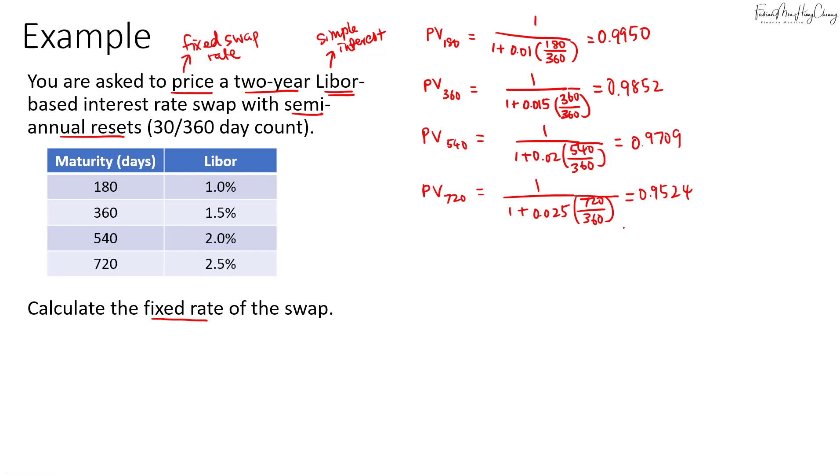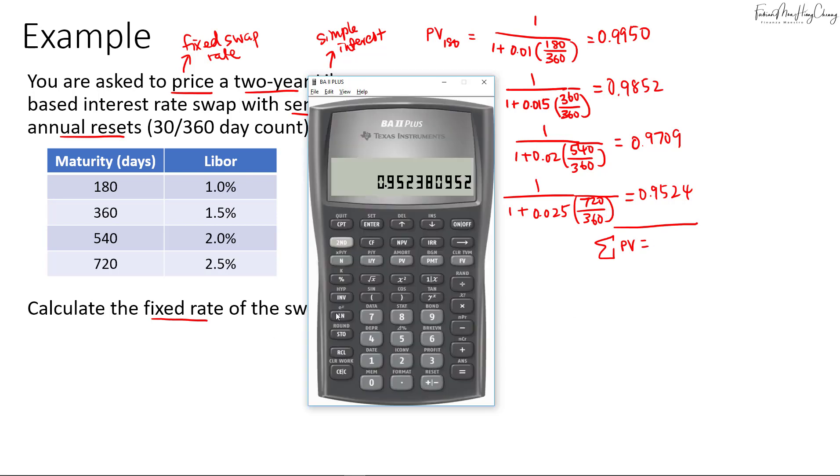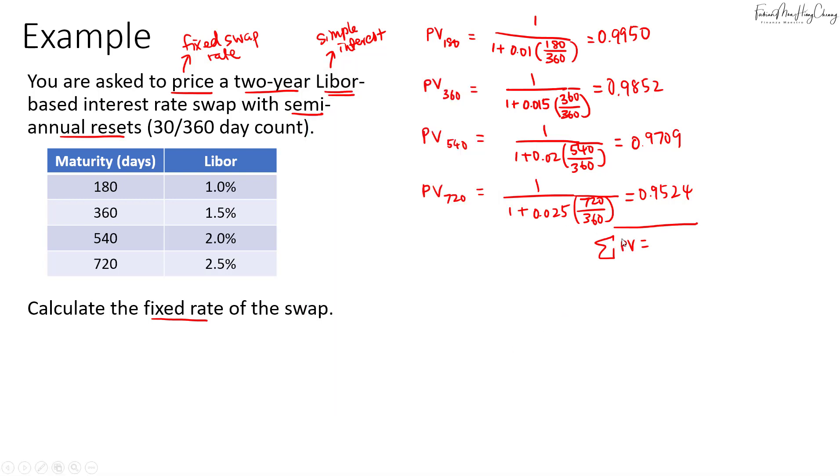Now what we need to do is sum up all these present value factors. So the total PV will be based on the sum. So remember we have saved up everything. So you can use recall 1 plus recall 2 plus recall 3 plus recall 4. So that would be equal to 3.9035. So we get the total.